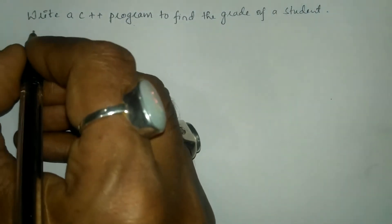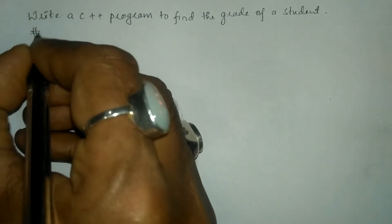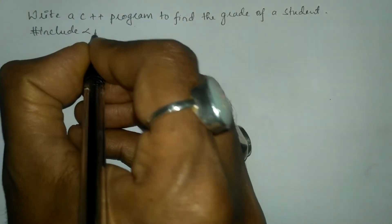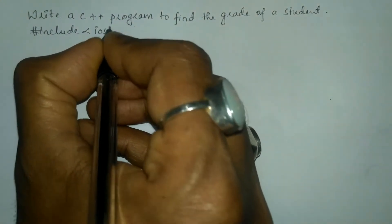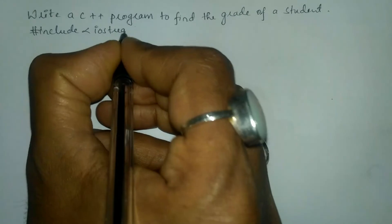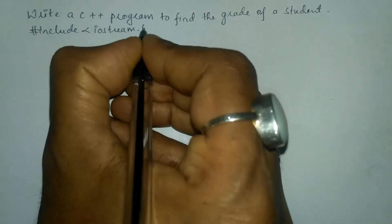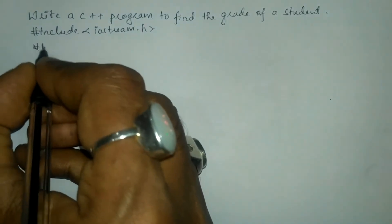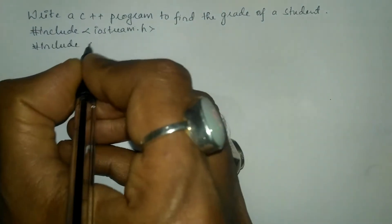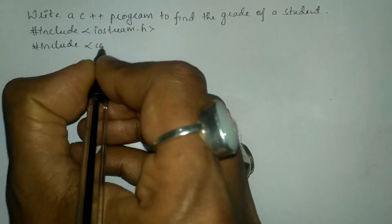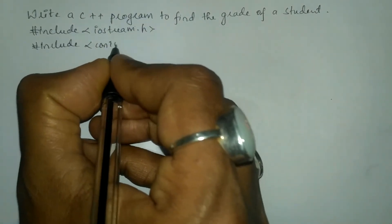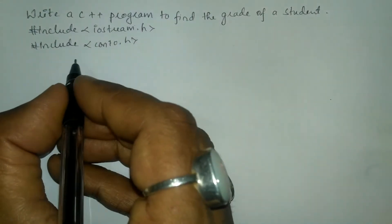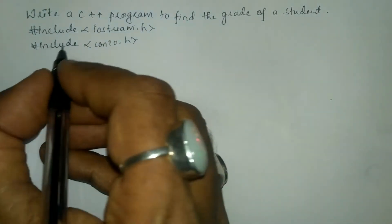Let us write the preprocessor directives: hash include in angular brace we will write the iostream.h header file, and the next preprocessor directive is hash include in angular brace we will write conio.h header file.